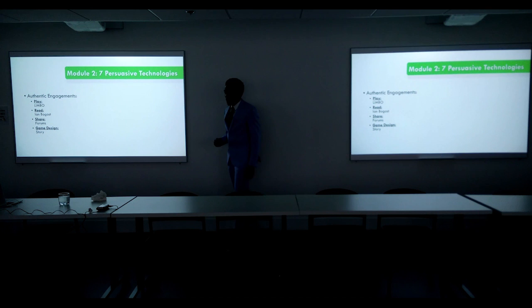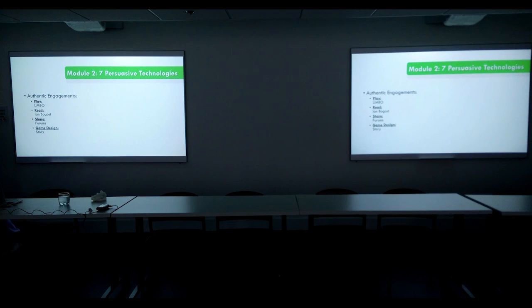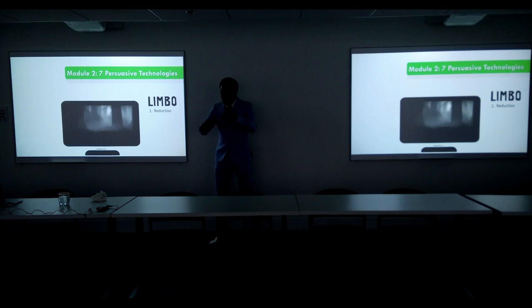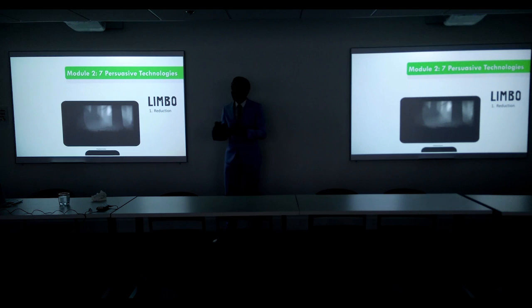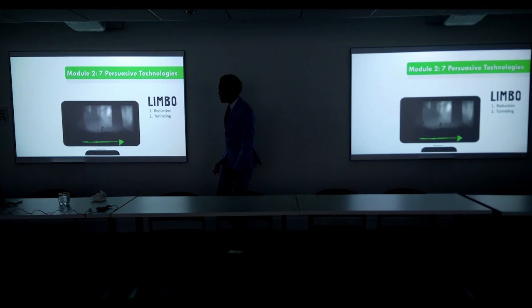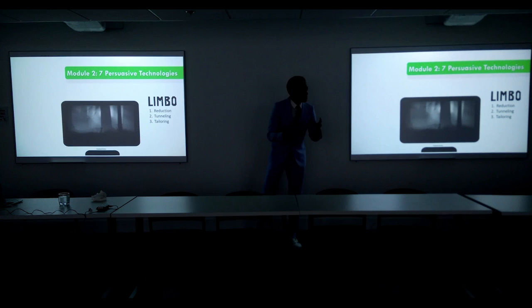I'm going to teach Ian Bogost's 7 Persuasive Technologies via the game that participants are tasked with playing in this module — Limbo. The first Persuasive Technology is reduction. This character will stand up and walk, but walking is simplified to holding a single direction, so that the act of walking in game does not take away from navigating the experience, solving puzzles, and figuring out why we did it in the first place. Next we have tunneling — the character wakes up facing right and the left side of the screen is darkest, nudging us to move in a single direction.